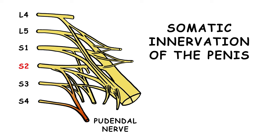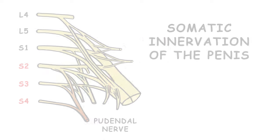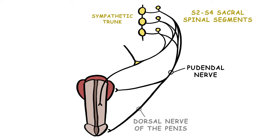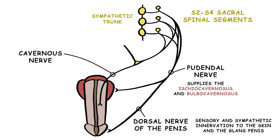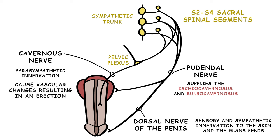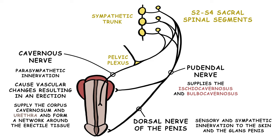The pudendal nerve continues as the dorsal nerve of the penis, which supplies sensory and sympathetic innervation to the skin and the glans of the penis. The pudendal nerve also supplies the ischiocavernosus and bulbocavernosus muscles. Cavernous nerves arise from the pelvic plexus and provide parasympathetic innervation, causing vascular changes resulting in an erection. The cavernous nerves supply the corpus cavernosum and urethra and form a network around the erectile tissue.